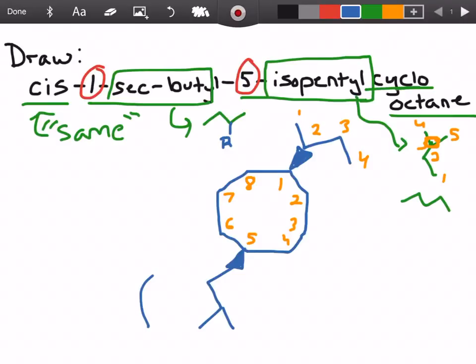So altogether you can kind of see just by looking at this compound we have cis-1-sec-butyl-5-isopentyl cyclooctane. Like I said this is an exam level question so if you guys were able to do this you should feel pretty good about knowing your cis and trans and your nomenclature as far as things like sec-butyl and isopentyl.